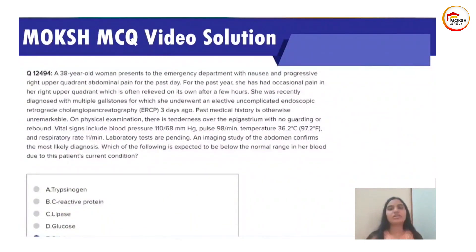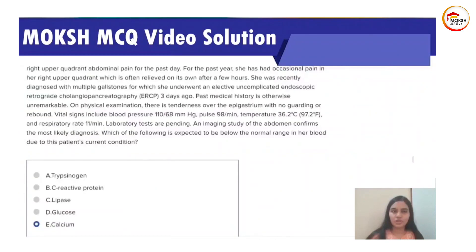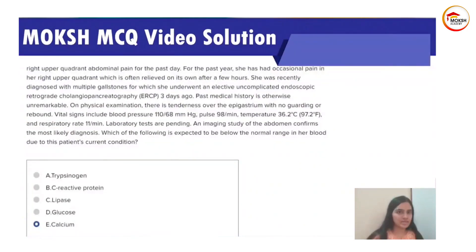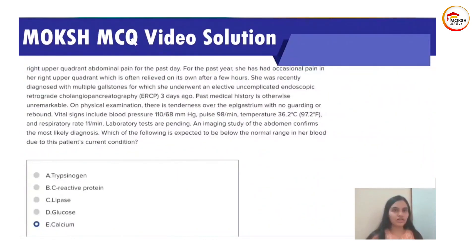What is acute pancreatitis? It occurs due to mainly two causes. Either due to active alcohol consumption — alcohol acts as a direct toxin and damages the pancreas, and also increases pancreatic enzyme secretion. Another cause is gallstones, which cause obstruction at the level of the ampulla of Vater.